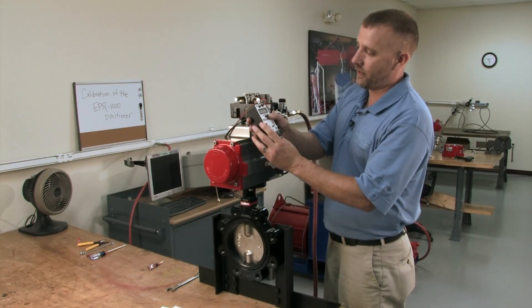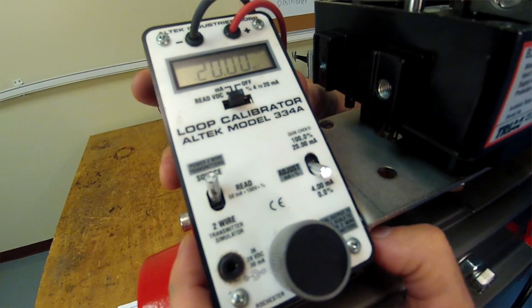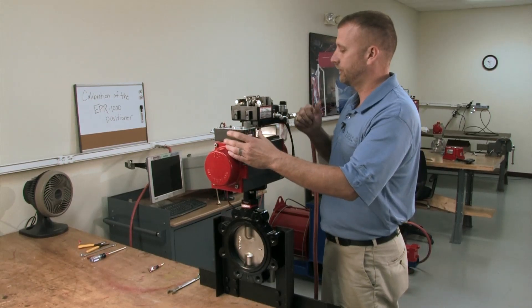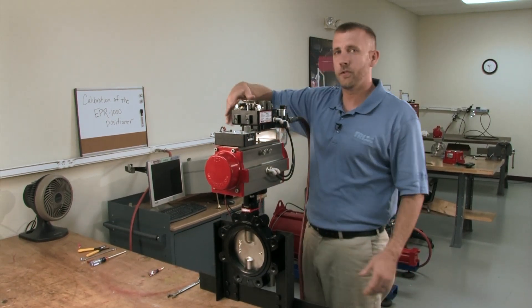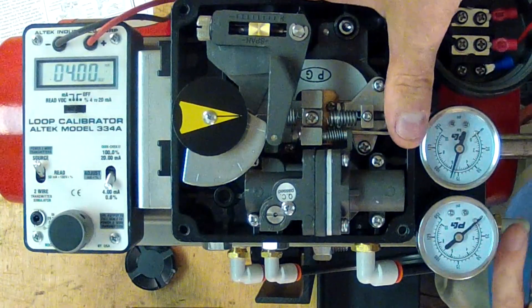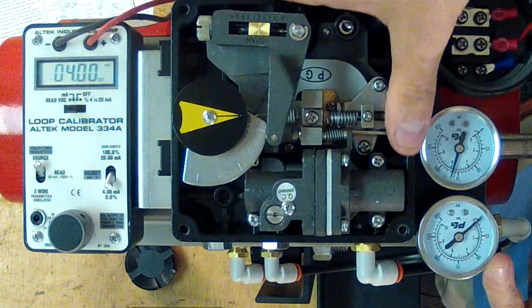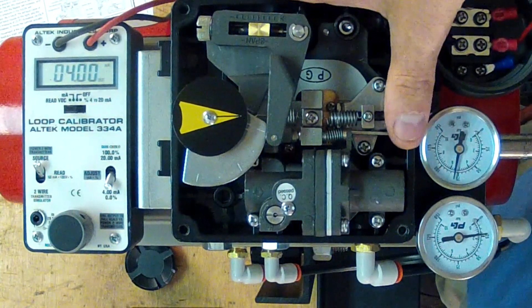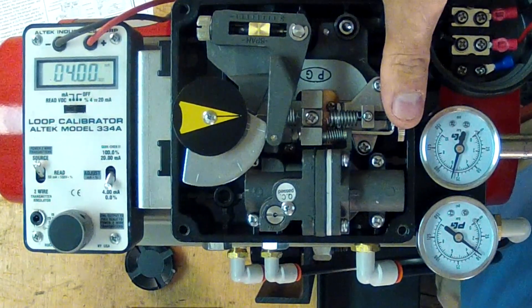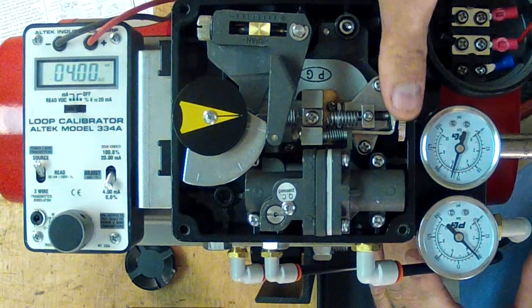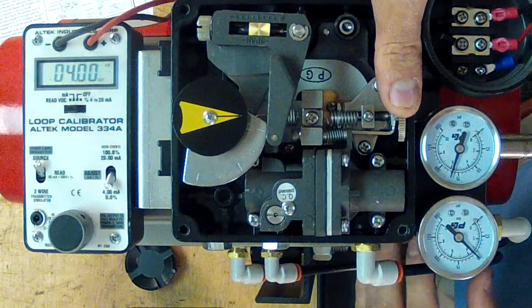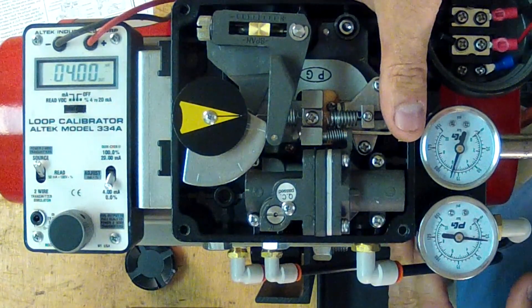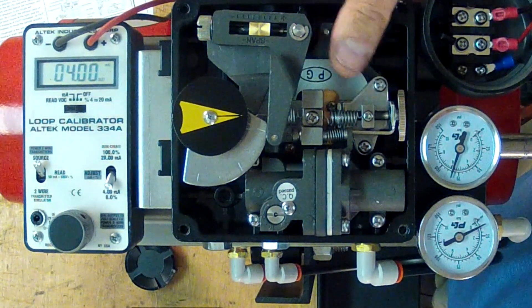Now, turn your calibrator on. I'm going to start at our 4 milliamp position. And what you do is you adjust your thumb screw clockwise until the gauge begins to climb. And once you notice it's climbed, you back it off counterclockwise until it falls nice and slow down to the zero position.